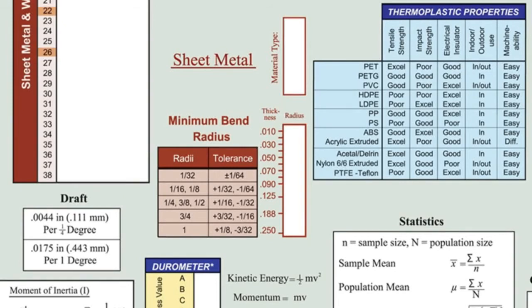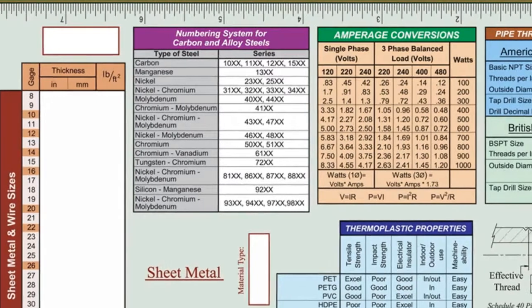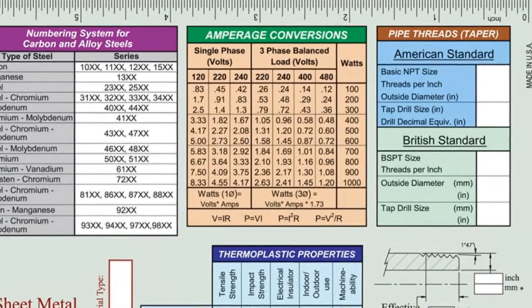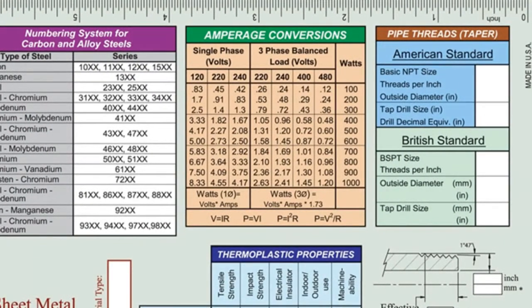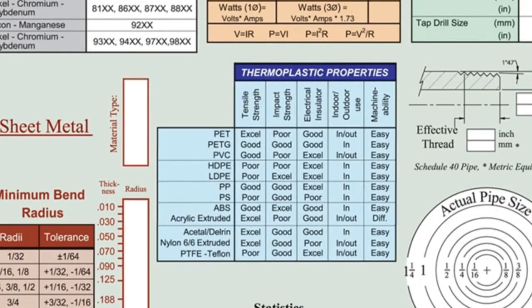A table with a numbering system for carbon and alloy steels is also included. Tables in the upper right list pipe threads for American and British standards, an amperage conversion chart that includes common electrical formulas, and a reference for thermoplastic properties of common plastics and characteristics of each.